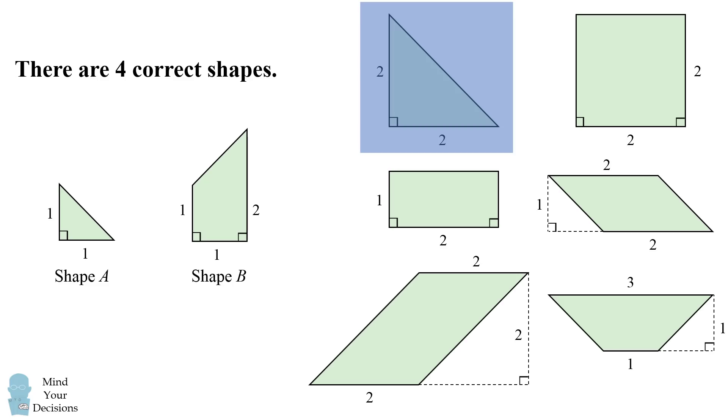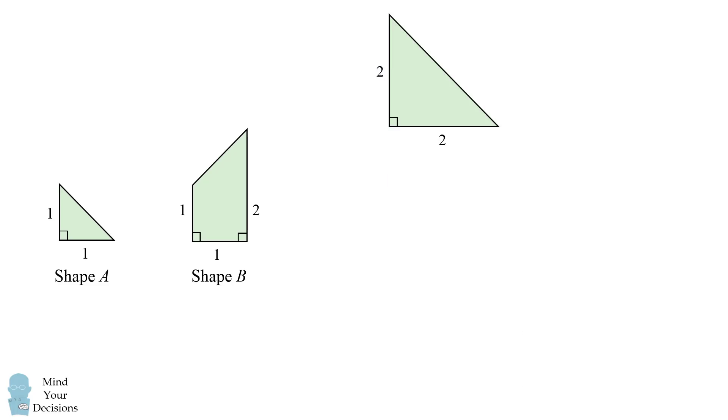One of the correct shapes is this right triangle. How do we form it? Let's take our two shapes A and B and then let's rotate shape B. Now the two shapes have formed this right triangle.